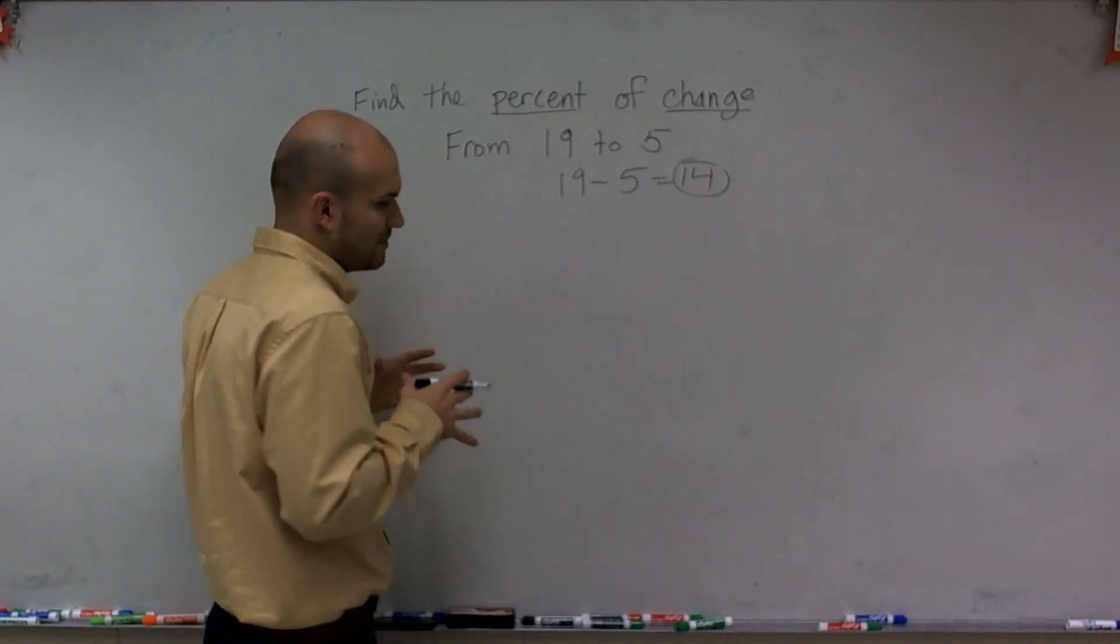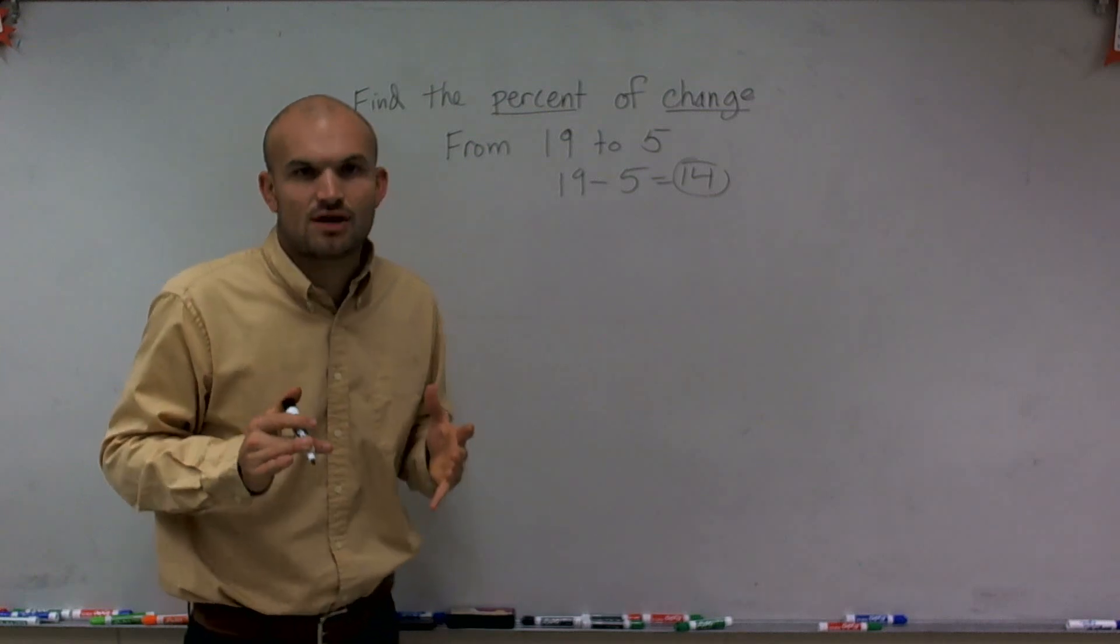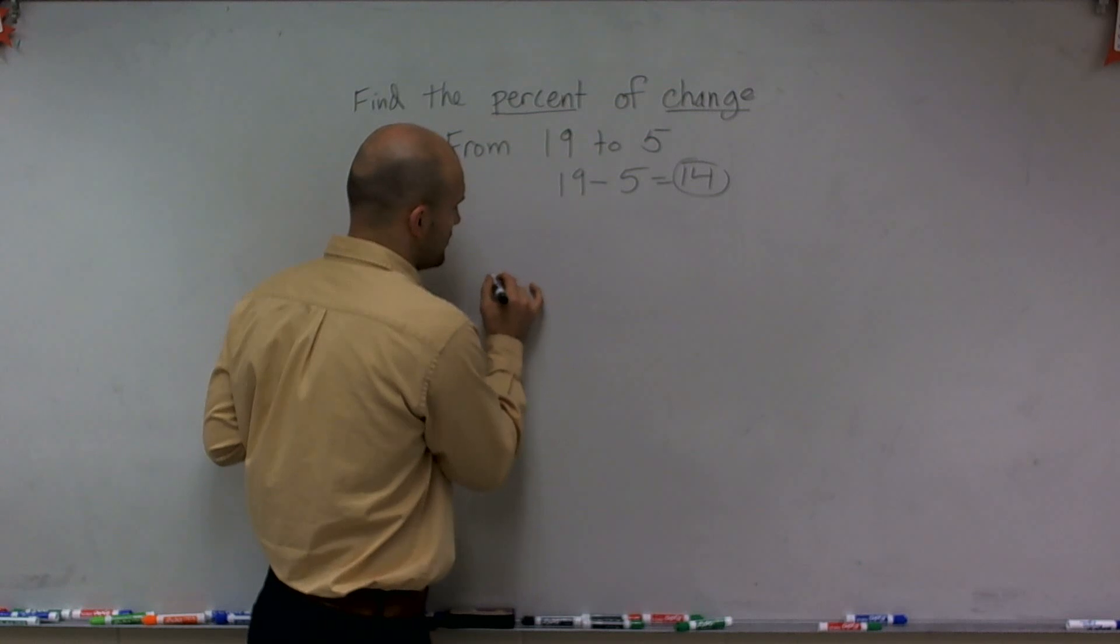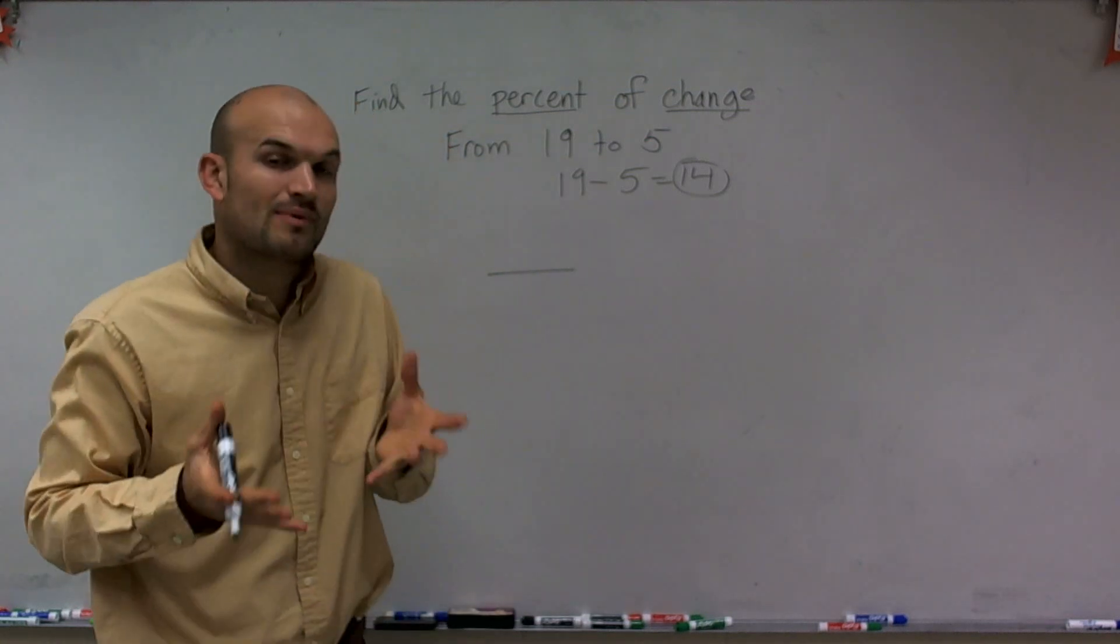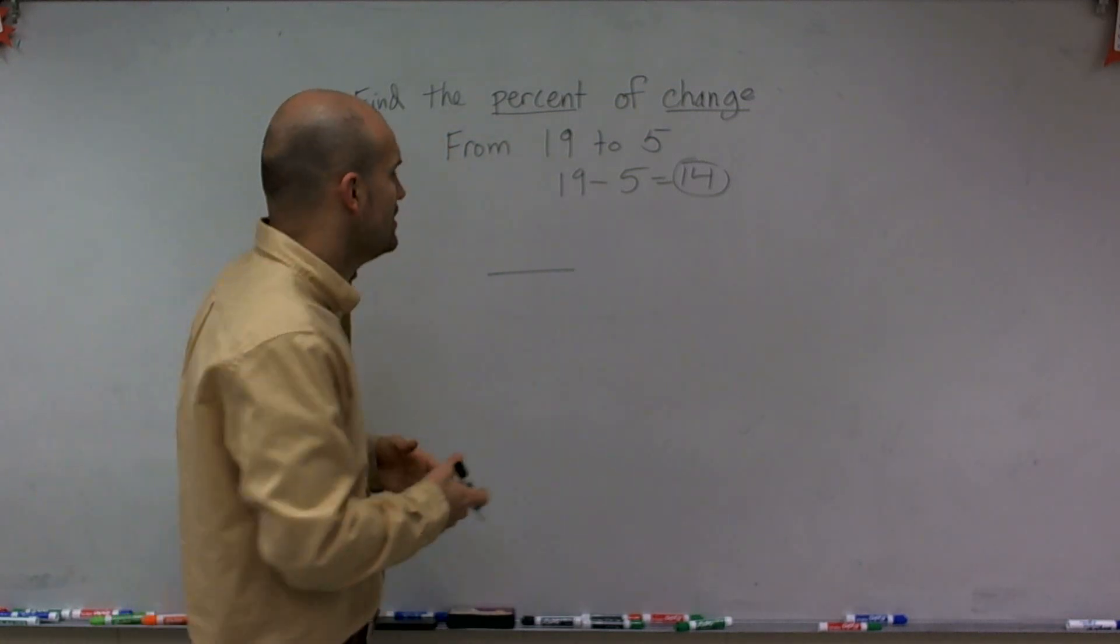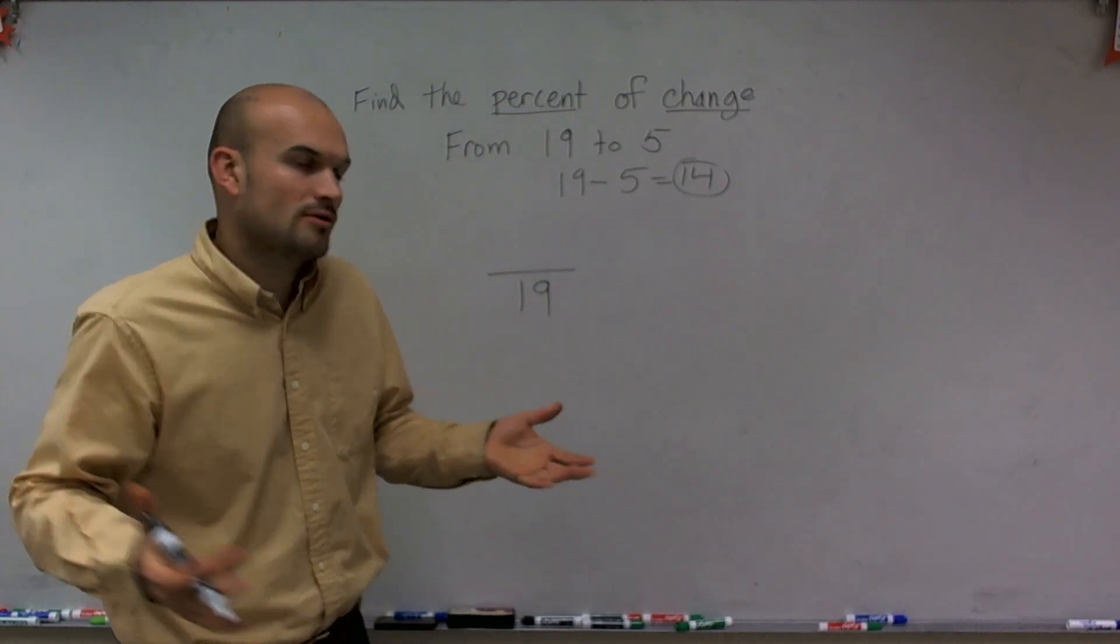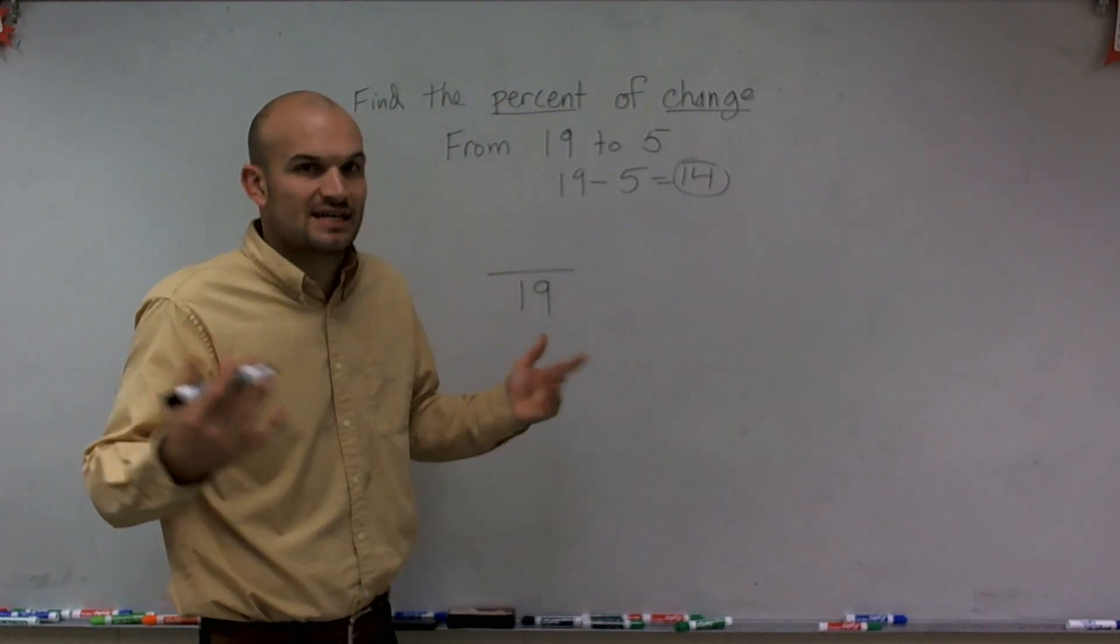So what we want to do whenever we're trying to find percent, it's always helpful to kind of look at this as far as ratios and proportions. The main important thing when looking at a ratio is it's going to be a comparison. Well, if let's say if I have 19, I'm going to say 19 is going to be my total amount, and let's just talk about sticks for instance.